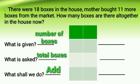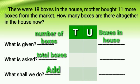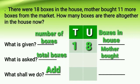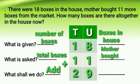Let us name our columns first: our tens column and our units column. There were 18 boxes in the house, so we will put 1 in the tens column and 8 in the units column. Mother bought 11 boxes from the market, so we will put 1 in the tens column and 1 in the units column. Let us now add: 8 units plus 1 unit is equal to 9 units. 1 ten plus 1 ten is equal to 2 tens. So we have 29 as the total number of boxes in our house.